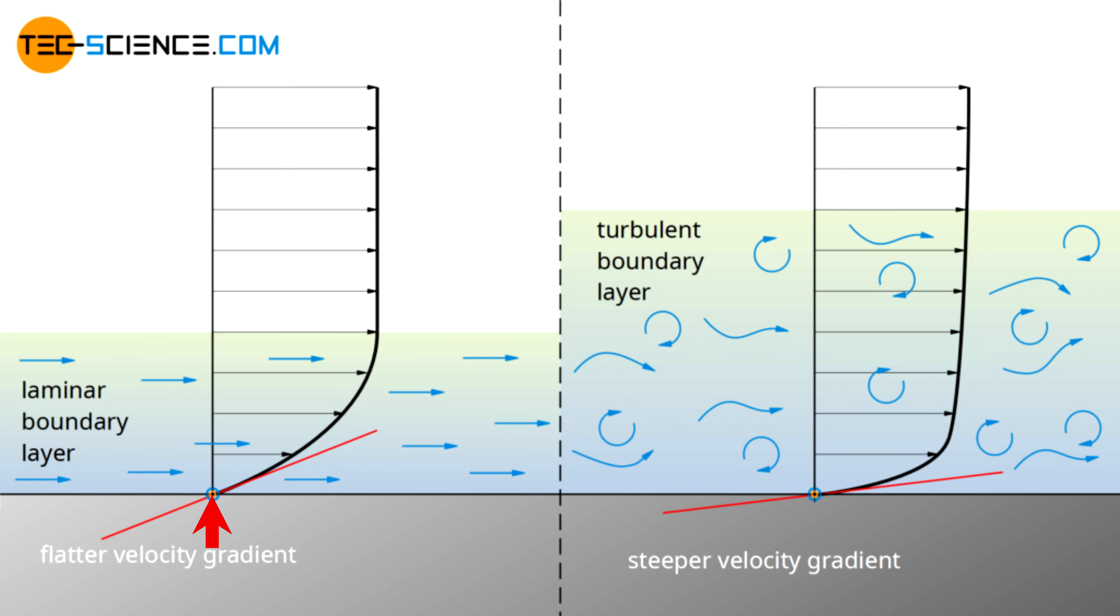For laminar flow, speed increases slower at the wall than for turbulent flow, leading to significantly less tugging at the wall, leading to less skin friction drag.